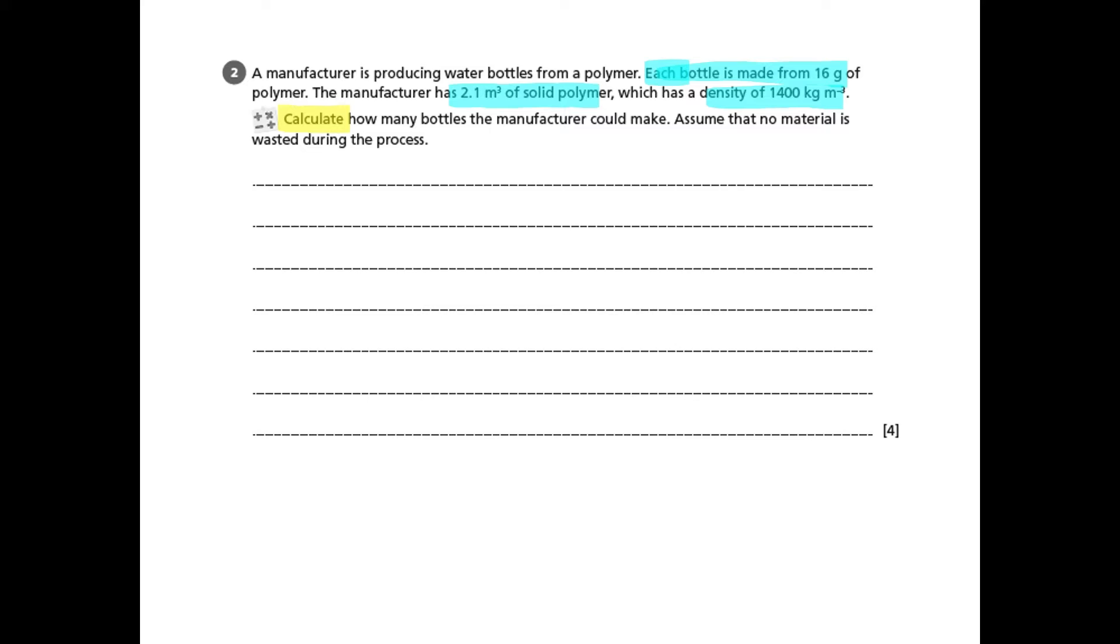So we need to work out how much weight or how much mass the manufacturer has of polymer. We've been given a volume and we've been given the density, so therefore it should be relatively quick to work out the mass. That total mass can then be divided by the 16 grams from the bottles. There's two sections to this: first, working out how much mass we've got in total, and then how many bottles each. It's a four mark question, so we're expecting two marks per each step.